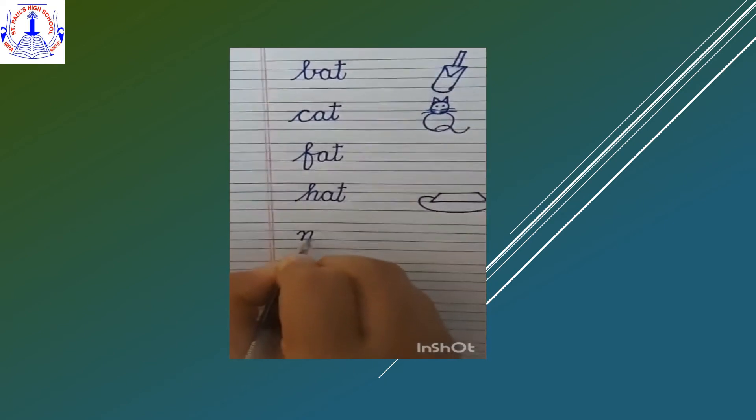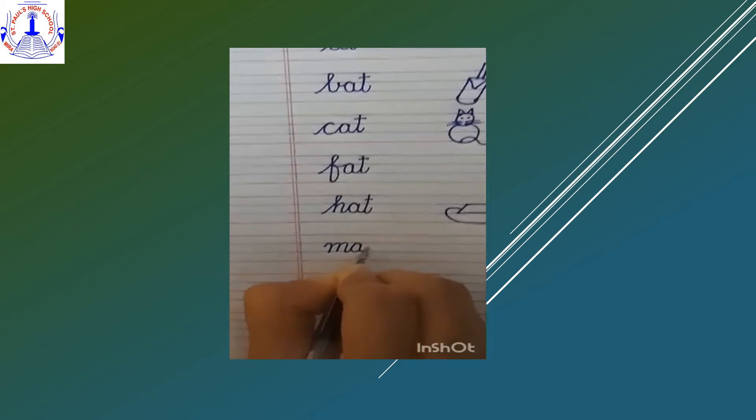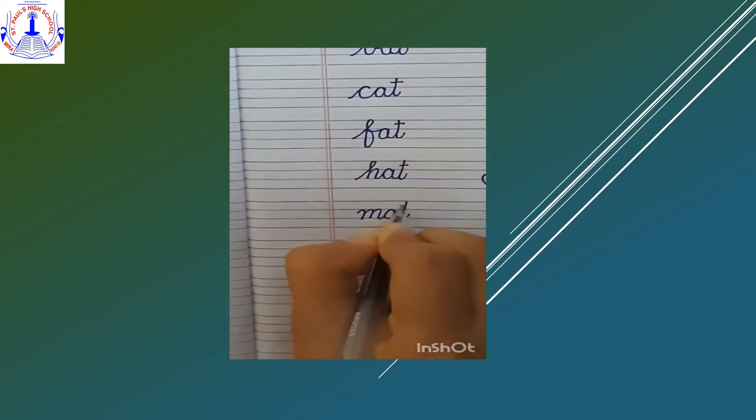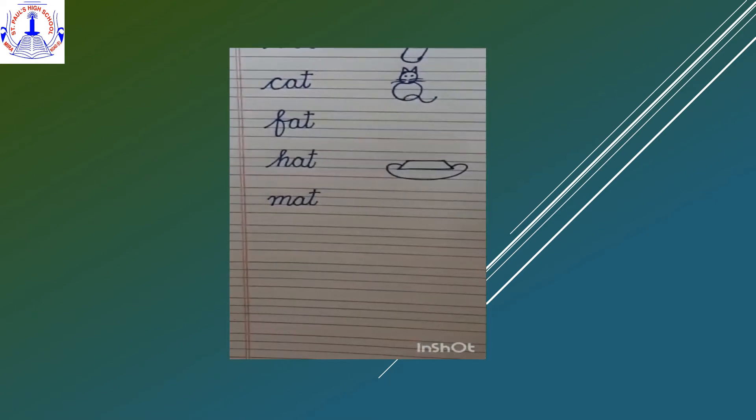Our next word is M-A-T, mat. Small cursive M joining with A joining with T. M-A-T, mat.